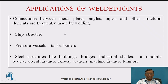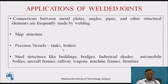Welded joints have a wide range of applications, particularly in steel structures, where almost all fabrication work uses welded joints. Applications include connections between metal plates, angles, pipes, and other structural elements. Huge ship structures are also welded structures. Pressure vessels, particularly tanks of boilers, are obtained by butt welded joints. Other applications include bridges, sheds, automobile bodies, railway wagons, machine frames, and even furniture. Welded joints are the most popular type of permanent joints used in industries.